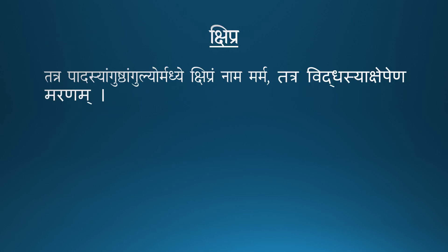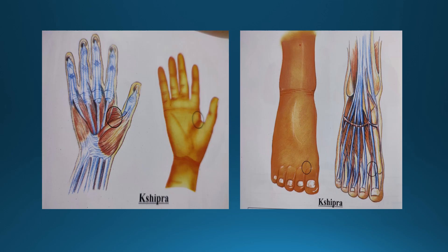The first one is Kshipra Marma. It is present in between the Angushtra as well as the second Anguli of the Pada. In the foot, the great toe and the second toe — in between these two there is a Kshipra Marma. In the hand also, it is in between the thumb and the index finger. This web space is known as Kshipra Marma. If any injury occurs to this Marma — Vidhasya Akshepena Maranam — the person will die after getting tremors.